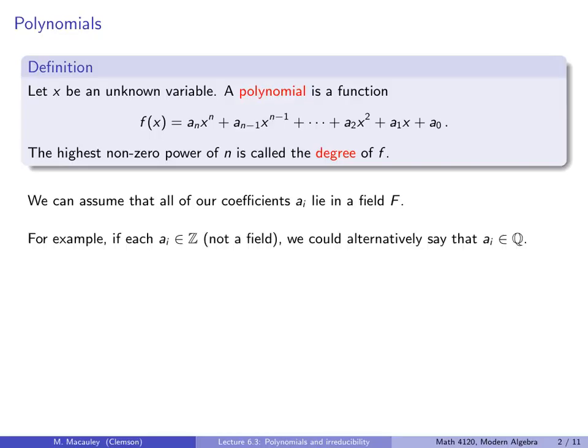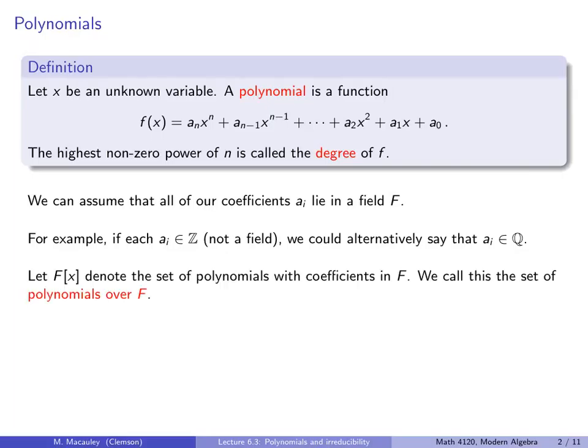For example, even if each coefficient a_i is an integer — and the integers are not a field, because we can't divide integers and remain in the set — we could alternatively say that the a_i's are rational, and that's a field, or reals, or complex numbers. We could always just expand our set until we get a field. Let F[x] denote the set of polynomials with coefficients in F. We call this the set of polynomials over F.